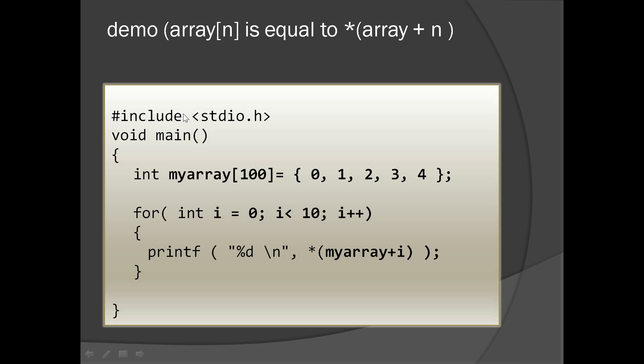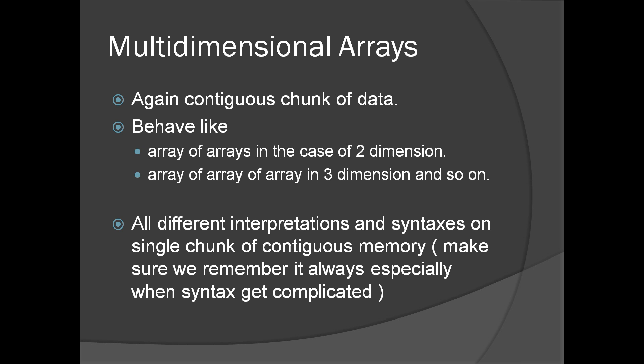So now let's go back to the slides. Moving on to multi-dimensional arrays — again they are contiguous chunks of memory. There is nothing called multi-dimensional arrays in memory; it's all contiguous chunk of memory. It's all about the way we interpret it, or the way the compiler helps us interpret it. Array means contiguous chunk of memory — two dimension, three dimension, single dimension, anything.